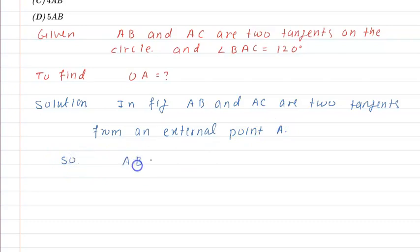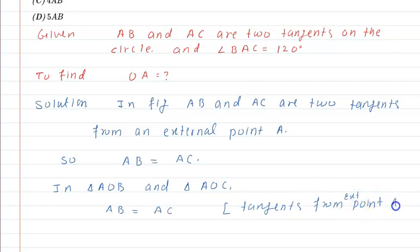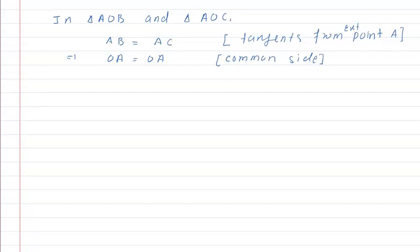हम बिल्कुल बोल सकते हैं कि जो AB है वो AC के equal होगा। In triangle AOB and triangle AOC, AB is equal to AC — tangents from external point A on the circle. OA is equal to OA — both triangles की common side है।